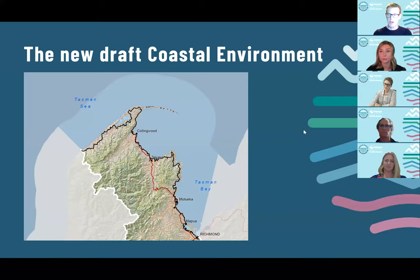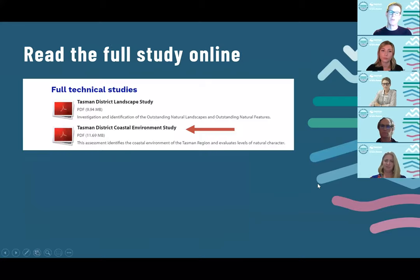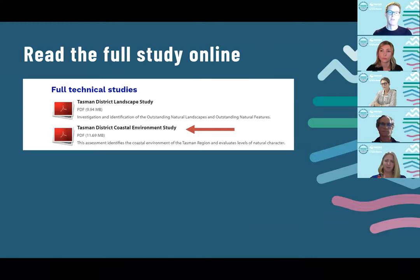As Bridget said about the landscape study, the coastal study was also peer-reviewed — Bridget was the peer reviewer — to ensure the study was going in the right direction. Along with the landscape study, the coastal study also has a series of tables articulating the values and characteristics of areas that are special in the coastal environment. They're all contained within the coastal environment study on the council website. I really hope you have an opportunity to look through that, and I'll be happy to answer questions in the second half.